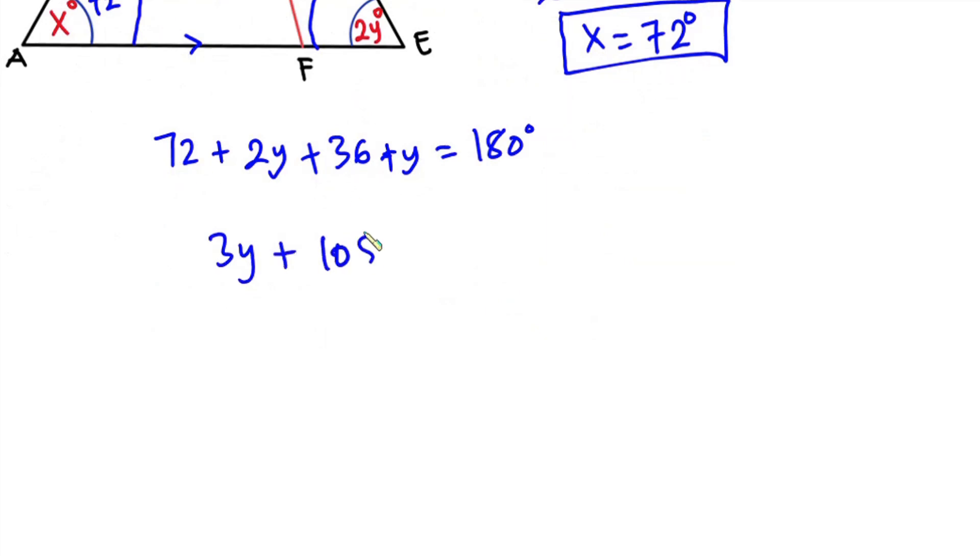So we have 3y is equal to 180 minus 108. 180 minus 108 is 72. Let's go ahead and divide each side by 3, so that this 3y will cancel.